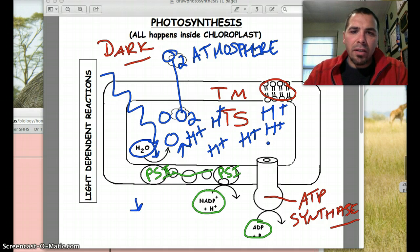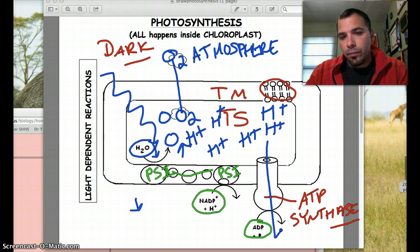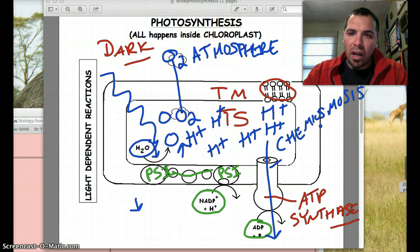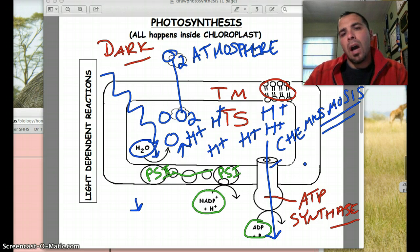So what's going to happen is for those hydrogens to leave or go down the gradient, they have to pass through ATP synthase. This process of them moving, we talked about osmosis being the movement of water, this is called chemiosmosis. So if you see that osmosis part, high to low.